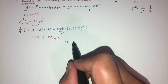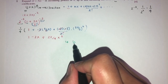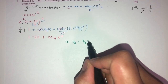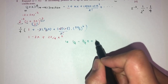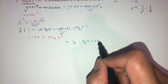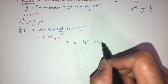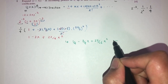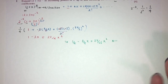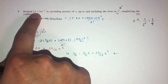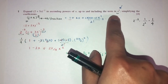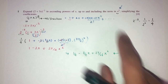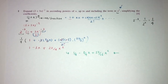Expanding the brackets with the 1/4 factor outside, that will be 1/4 − 3/4·x + 27/16·x². So this is the expansion up to the term in x², and that is your question number one.